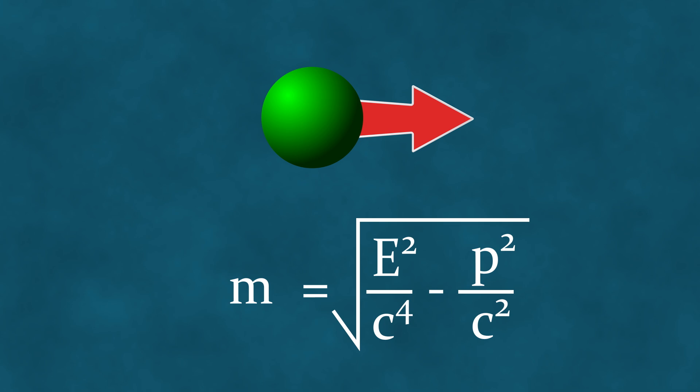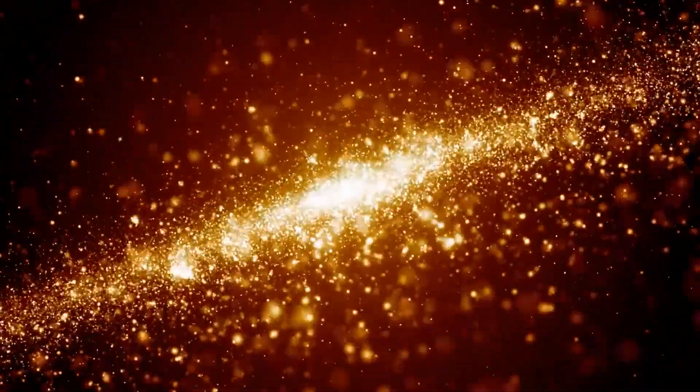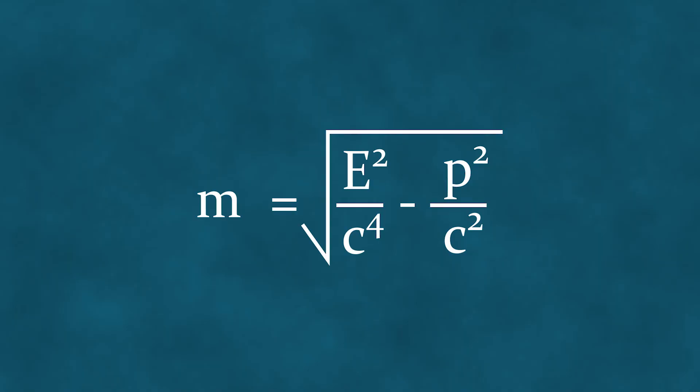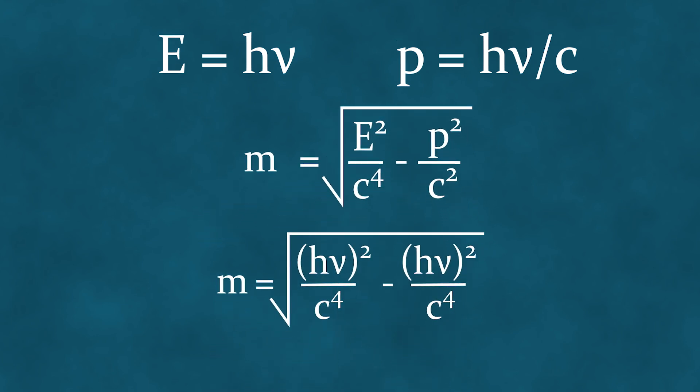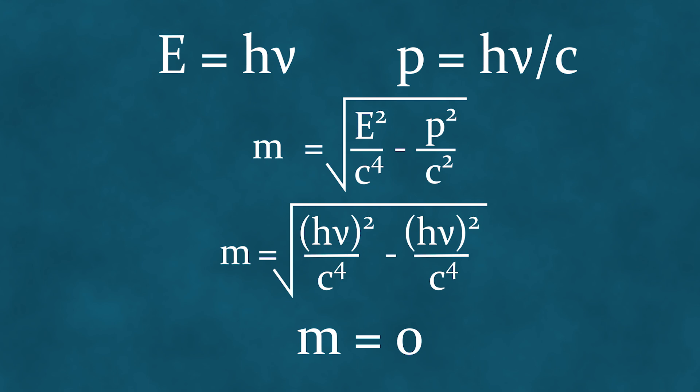Let's test this formula using the popular claim that a photon has no rest mass, but possesses an energy mass, equal to its energy divided by the square of the speed of light. The energy and momentum of a photon are defined by these formulas. Substituting them into our equation gives us zero. Thus, in the theory of relativity, the mass of a photon is zero, and there is no such thing as an energy mass for a photon equal to its energy divided by the square of the speed of light.